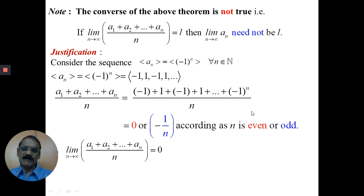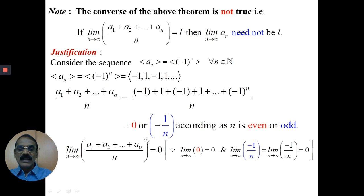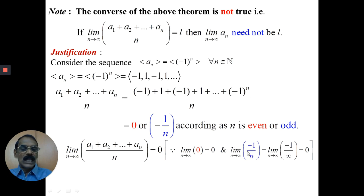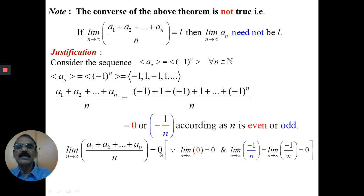In both cases, if we take the limit of the left-hand side, it is 0. Because when n is even, the whole sum is 0, so limit of 0 is 0. When n is odd, the sum becomes -1/n, and the limit of -1/n is also 0. Hence, the limit of (a1 + a2 + ... + a_n)/n, that is the arithmetic mean of the first n terms of the sequence, is 0.